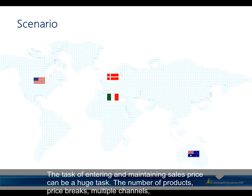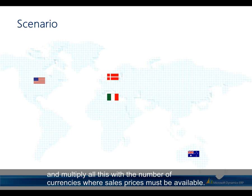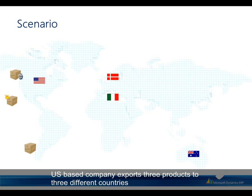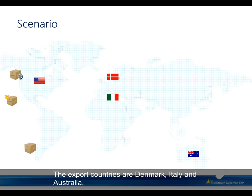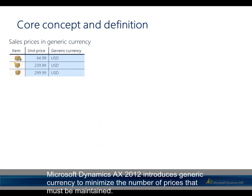The task of entering and maintaining sales prices can be a huge task. The number of products, price breaks, multiple channels, different segments, special and negotiated prices — all this contributes to a high number of prices. Multiply all this with the number of currencies where sales prices must be available. In a simple scenario, a US-based company exporting three products to three countries needs prices in four different currencies.